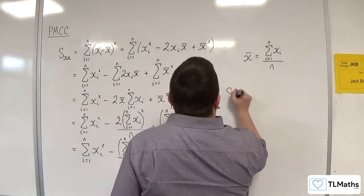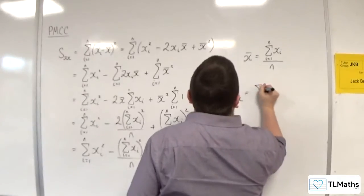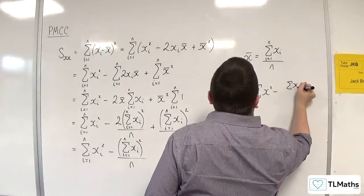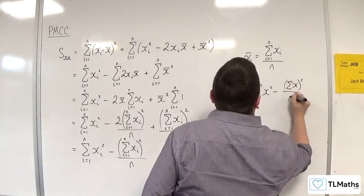So you can abbreviate SXX to the sum of X squared take away the sum of X all squared over n.